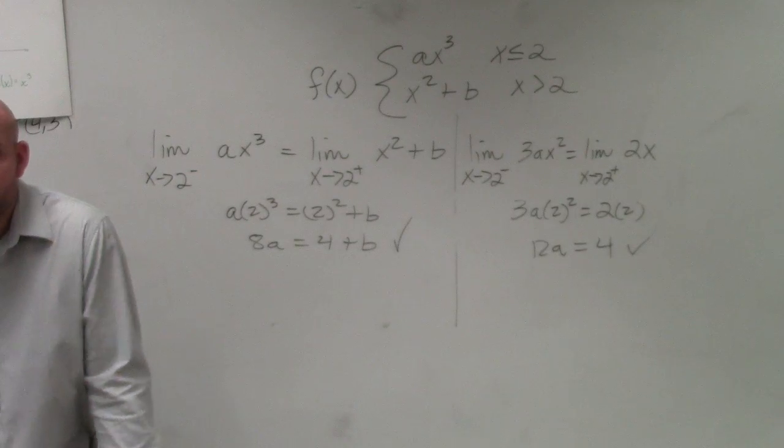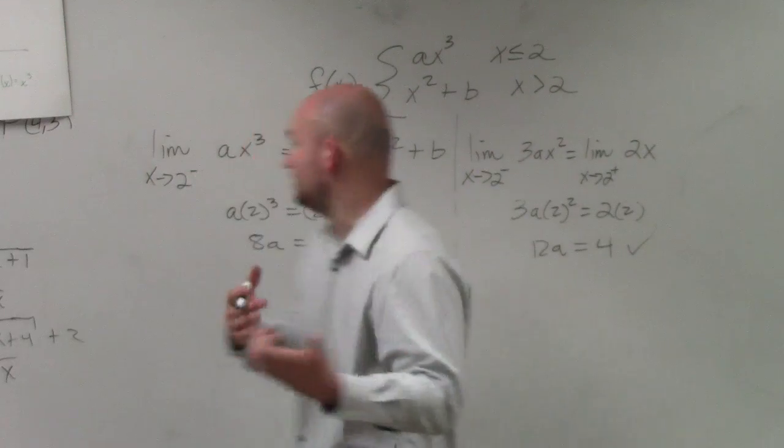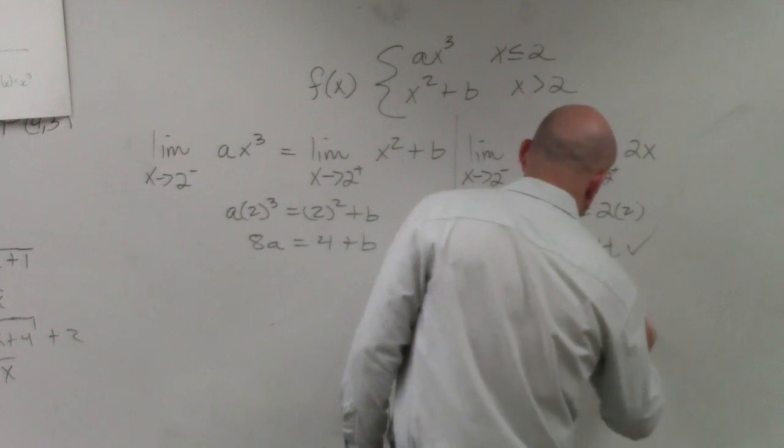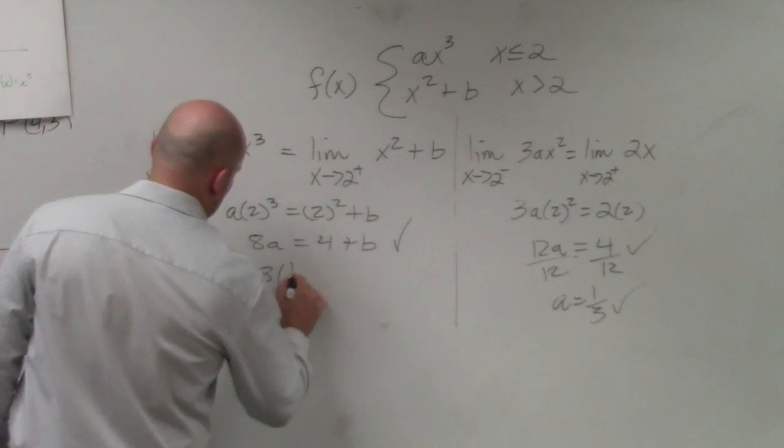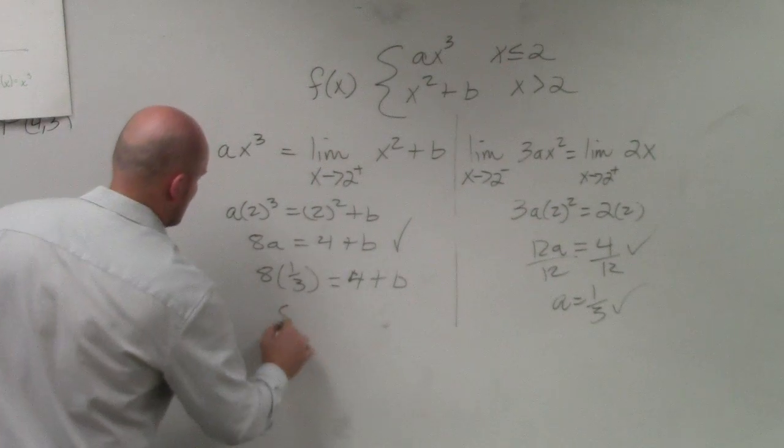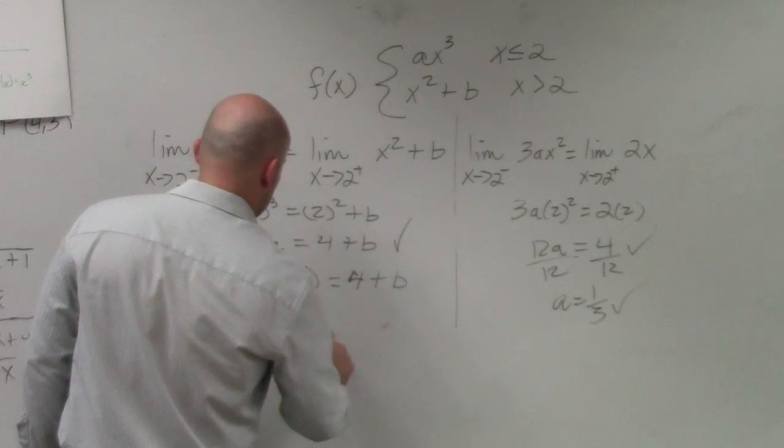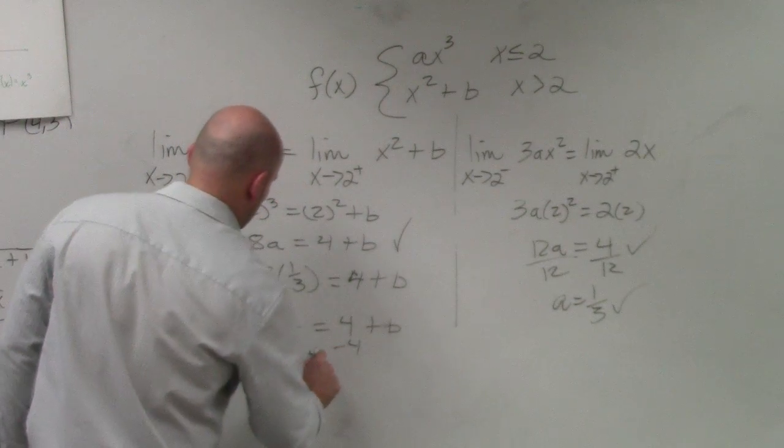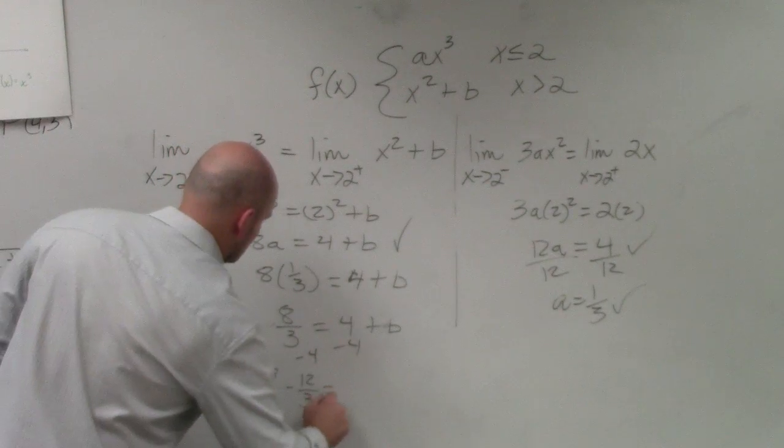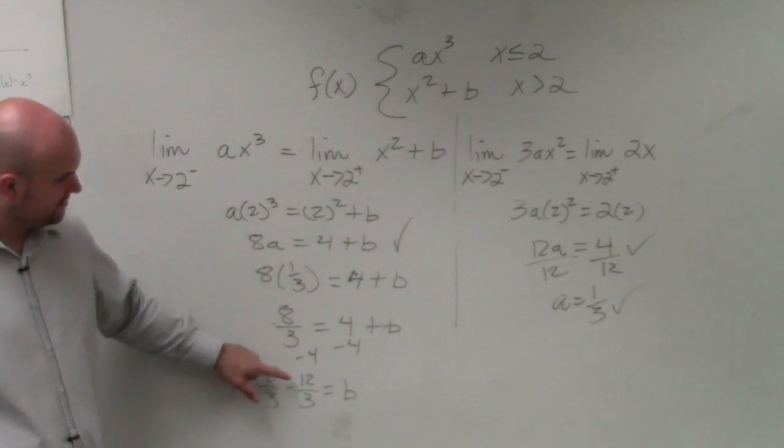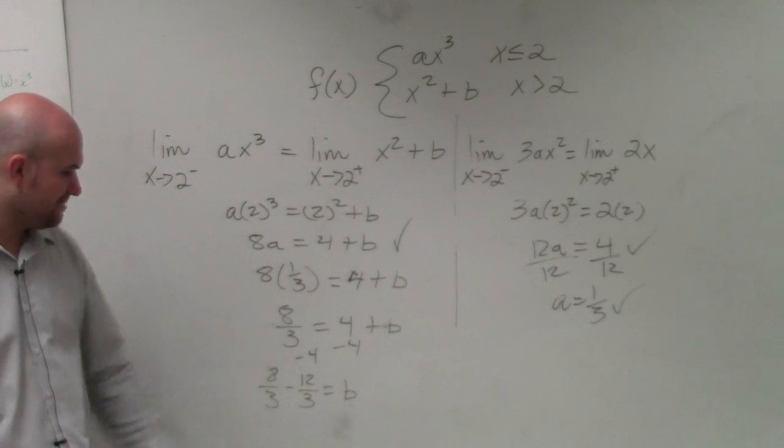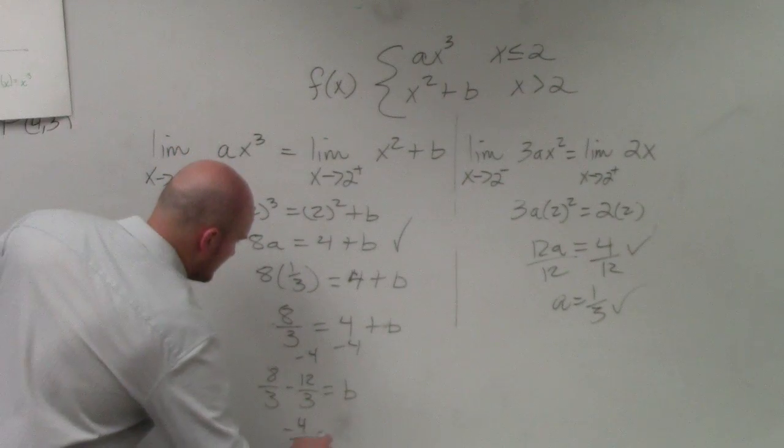And they're asking the question, though, what is the values of a and b that make the function differentiable? So I need to solve for a. a is equal to 1/3. Then, solve for b. I rewrote 4 as negative 12 over 3, because you guys agree with me that negative 12 divided by 3 is still negative 4. But now, they have common denominators. So I get negative 4/3 equals b.